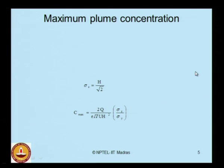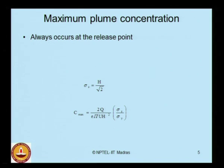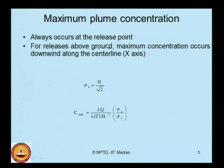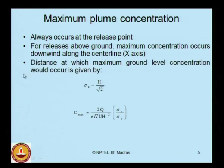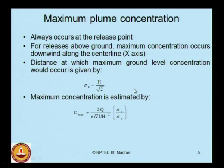For the maximum plume concentration: it always occurs at the release point where the gas is released at height h from the ground. For releases above the ground, maximum concentration occurs downwind along the central line x-axis. The distance at which the maximum ground level concentration occurs is given by a specific relationship, and the maximum concentration is estimated by the following relationship.